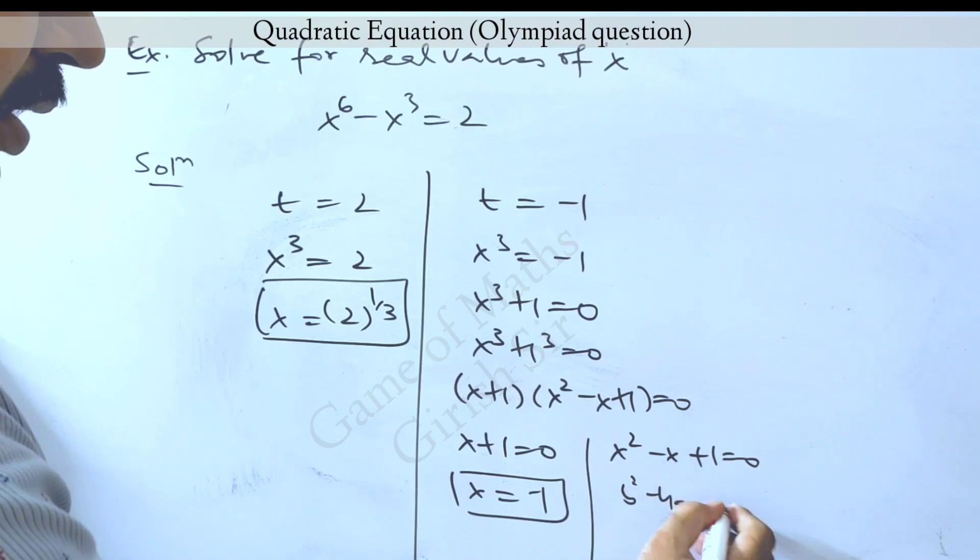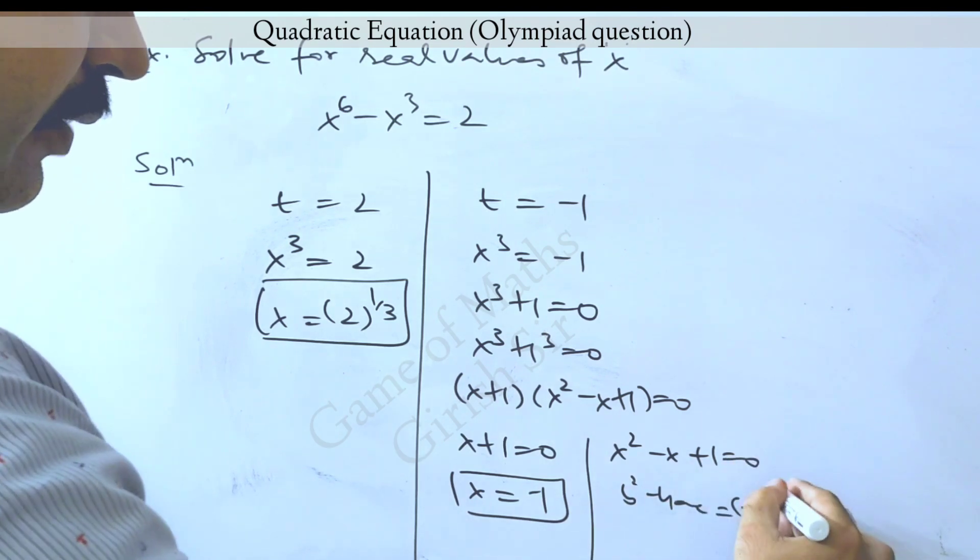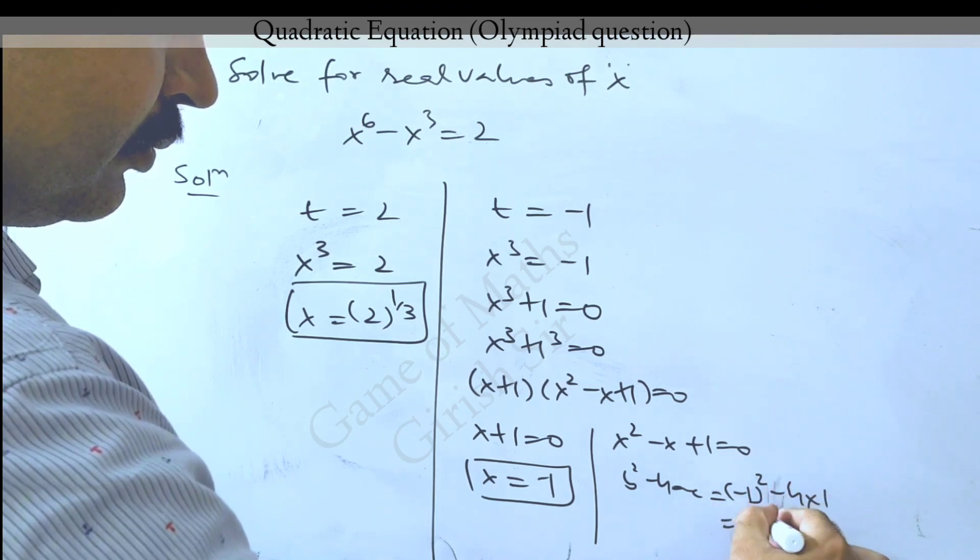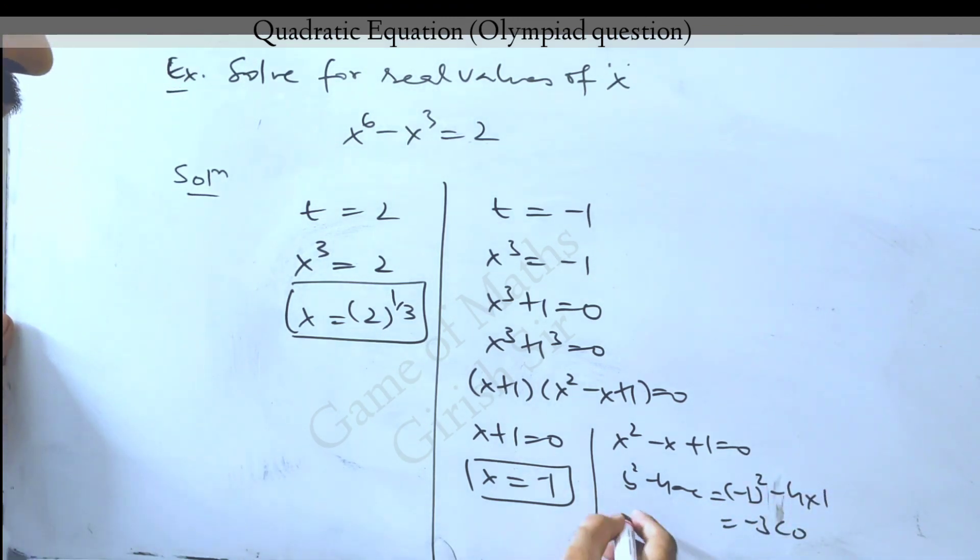But in this quadratic, the value of b square minus 4ac is negative, which implies no real value of x can be obtained from here.